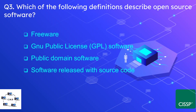Question number 3: Which of the following definitions describes open source software? The options are previous GNU public license (GPL) software, public domain software, or software released with the source code. The correct option is software released with the source code, such as Linux, whose source code is publicly available.